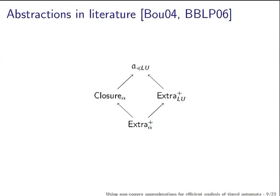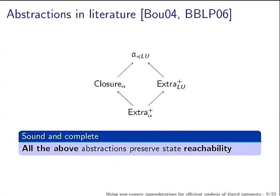This has been done. There are some nice abstractions defined in the literature. This slide also shows the hierarchy with respect to inclusion: for a given zone, the extra-plus is contained in the closure, which is contained in A. These two — extra-plus and A — are incomparable with respect to inclusion. With the argument from the previous slide, you want to make use of the biggest abstraction.